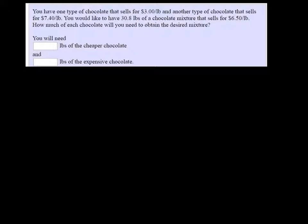You have one type of chocolate that sells for $3 a pound and another that sells for $7.40 a pound. You want to have 30.8 pounds of a chocolate mixture that sells for $6.50 a pound.